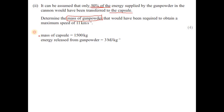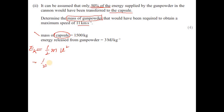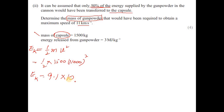Because the mass of the capsule is given and we know the velocity, we can find the kinetic energy gained by the capsule. Kinetic energy Ek = ½mv². Plugging in the values: Ek = ½ × 1500 × 11,000². Solving gives kinetic energy of approximately 9.1 × 10¹⁰ joules.